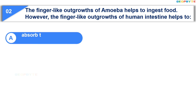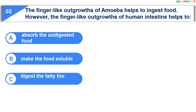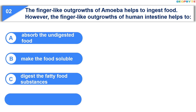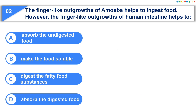Option A: absorb the undigested food; Option B: make the food soluble; Option C: digest the fatty food substances; Option D: absorb the digested food. Your time is up and the correct answer is Option D: absorb the digested food.